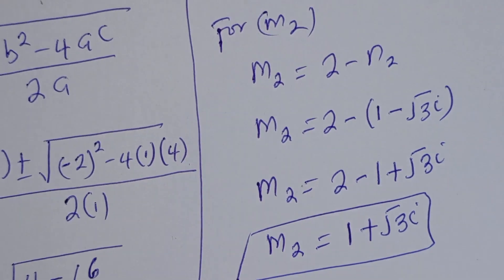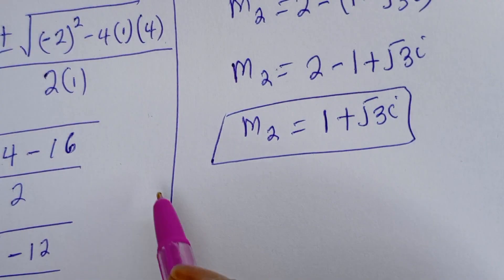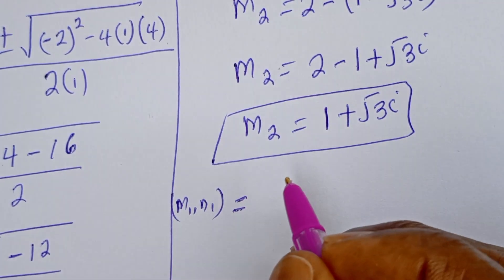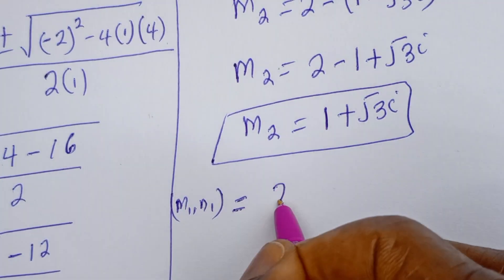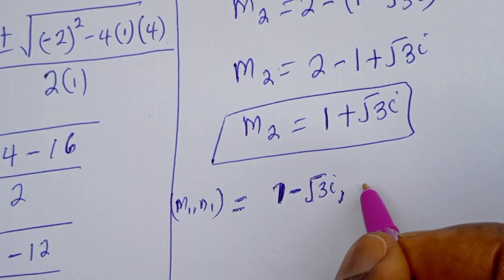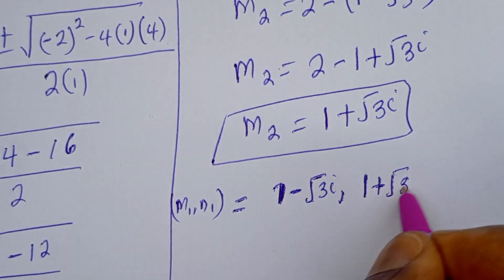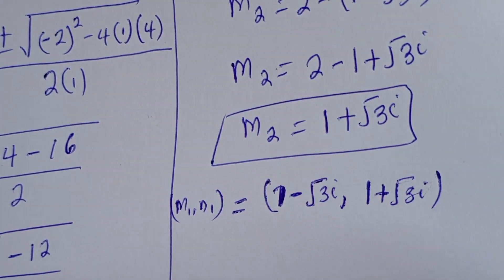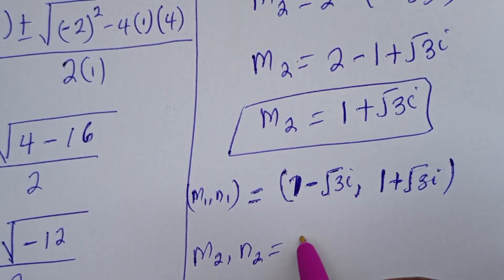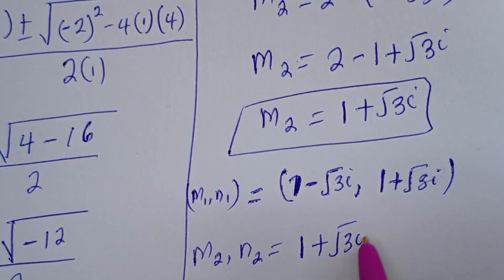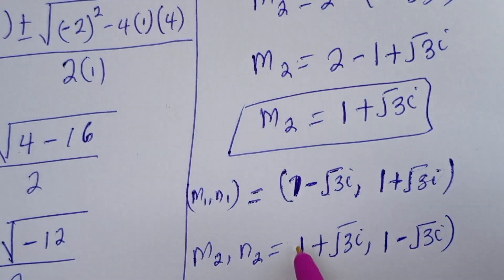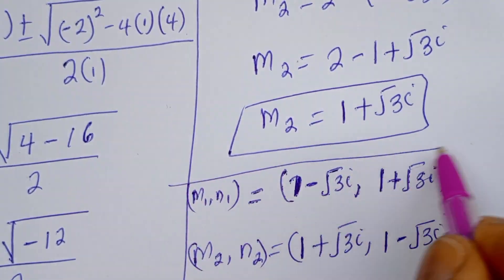Therefore, (m1, n1) equals (1 minus root 3 i, 1 plus root 3 i), and (m2, n2) equals (1 plus root 3 i, 1 minus root 3 i). So this is the final answer.